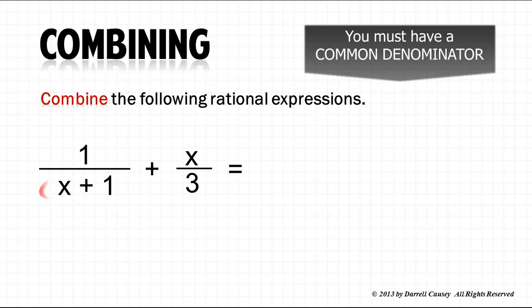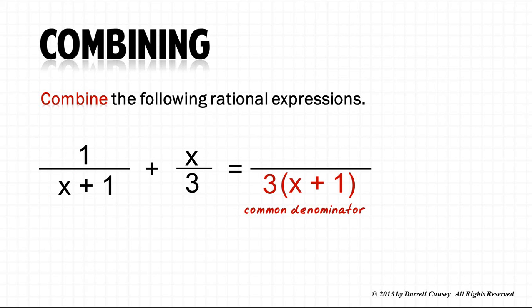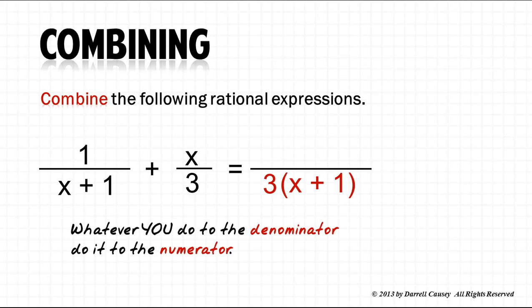So there's x plus 1, and there's 3, and we'll just multiply those two together. There's our common denominator. Whatever you do to the denominator, I must do to the numerator. To get 3 times x plus 1, I will need to multiply that denominator by 3, and so I'll do it to the numerator also.